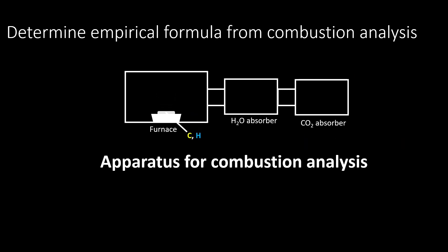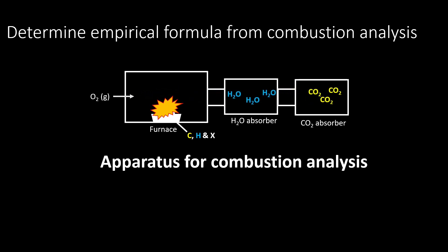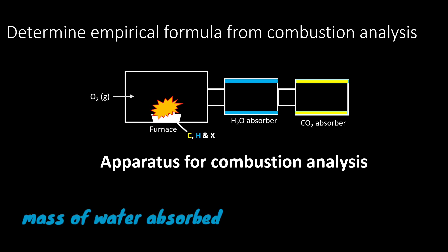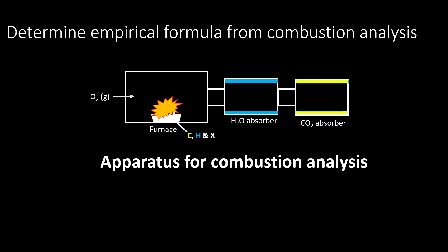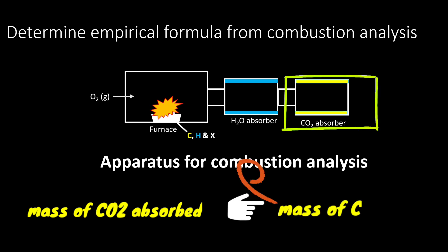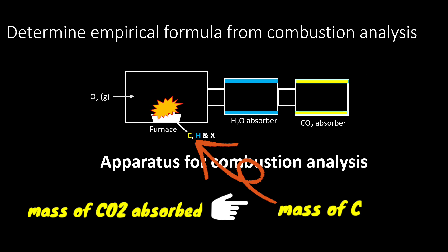For example, if this is a compound with carbon and hydrogen elements — and sometimes it can have another element X — you can still use combustion analysis. During the combustion reaction, oxygen is added, and the combustion reaction produces carbon dioxide and water. These products move to the water absorber and the carbon dioxide absorber. By determining the mass of hydrogen in the water absorber, we can determine how much hydrogen is present in the compound. And by determining the mass of carbon dioxide absorbed, we can determine how much carbon is present.